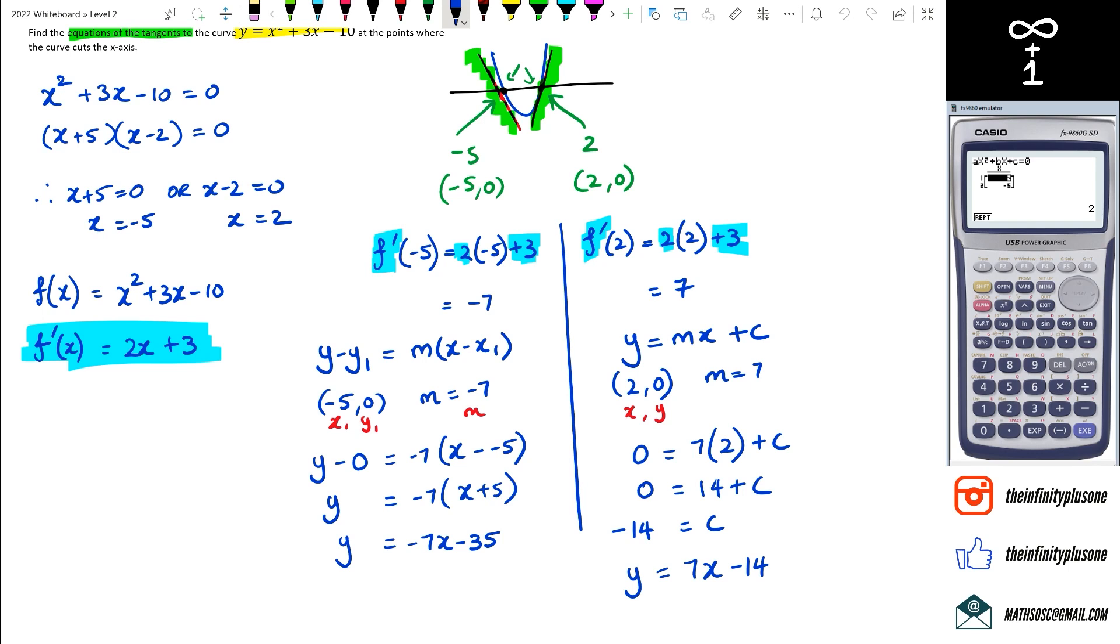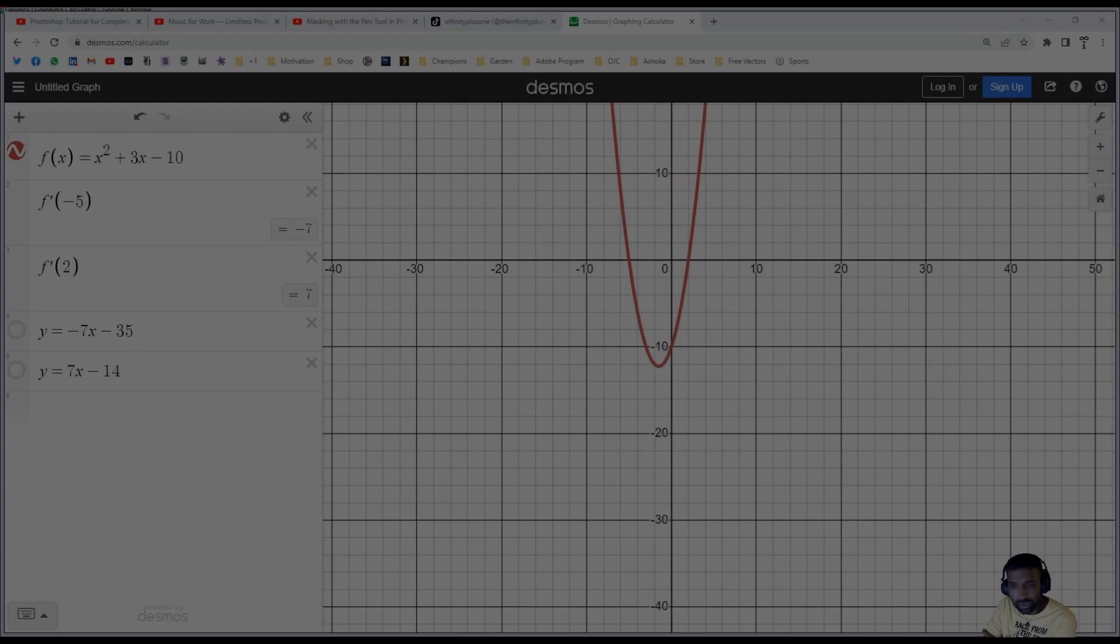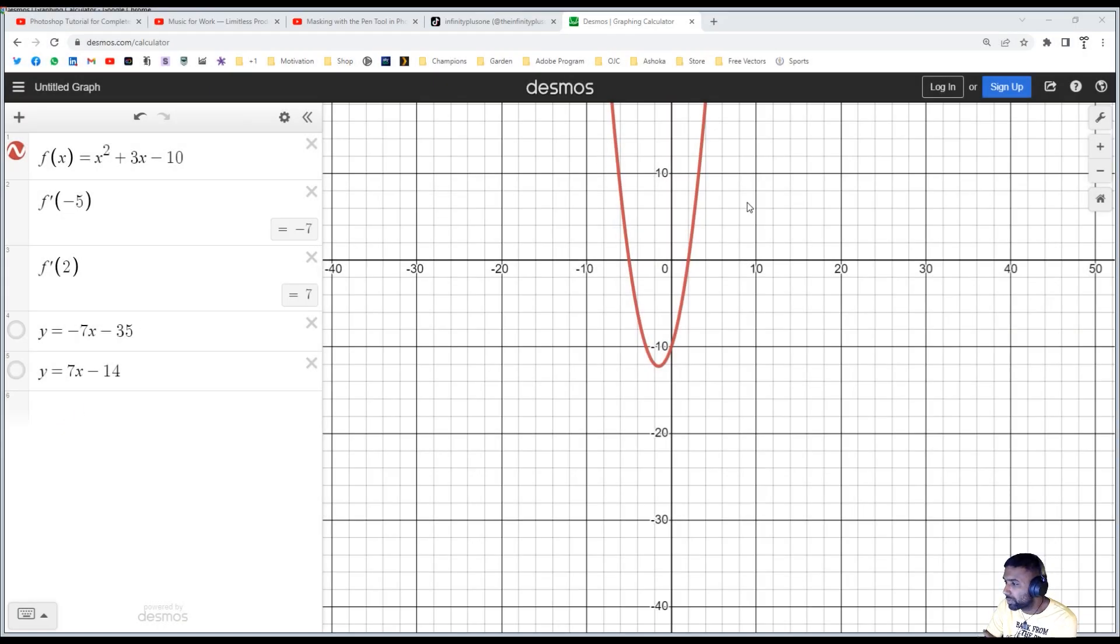So what we're going to do is just have a quick look at Desmos for this, guys, just to show you guys how it all makes sense. So here we go. So we've got our equation right there, which is our parabola. That's x squared plus 3x minus 10. We worked out what the two gradients was, which was negative 5 and positive 2. Because if you look at it, it is cutting the x-axis at negative 5 and positive 2.